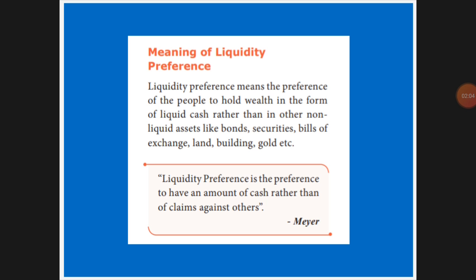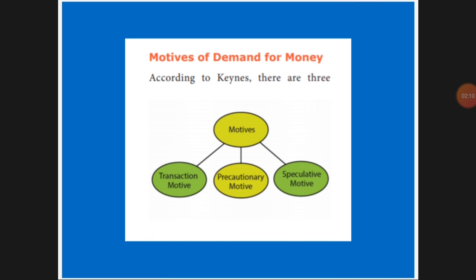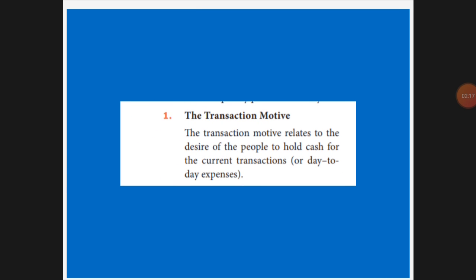According to Keynes, liquidity preference motives are of three types: transaction motive, precautionary motive, and speculative motive. Transaction motive means the people will desire to have money in their hand for day-to-day activity. Whatever money they keep in their hand for daily use is called the transaction motive. In your family, whatever amount you need for daily use, you will keep at home — you cannot keep all your salary in the bank.